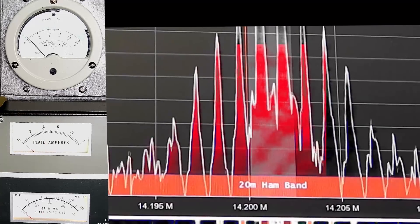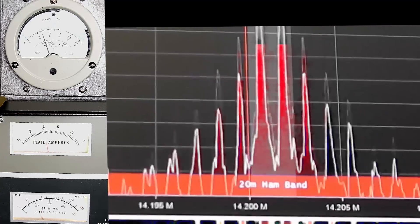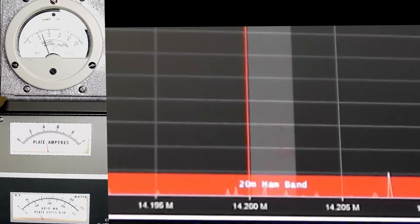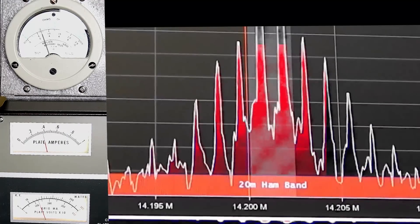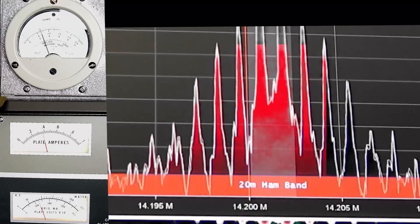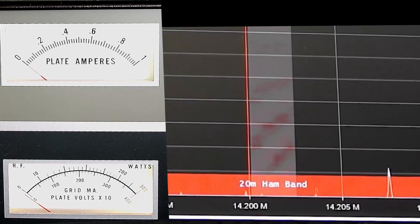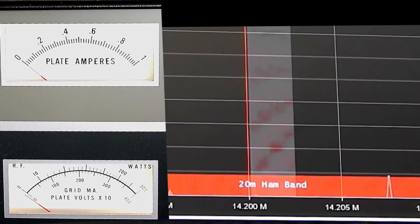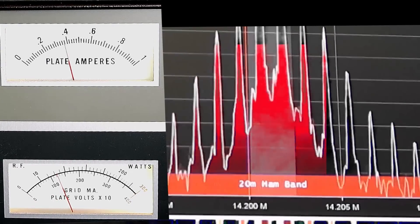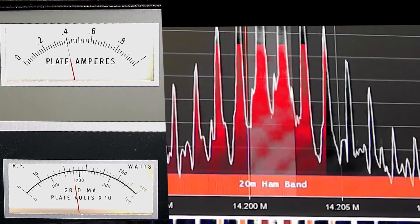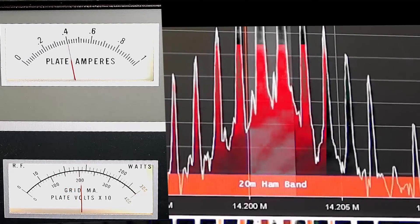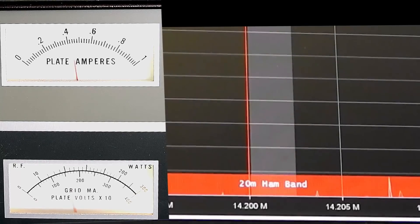All right, that's 450 watts and I've got about 100 mils of grid current, almost 400 mils of plate current, about 125. Let's run the drive up and I'm going to watch the grid current, that's the bottom meter. I'll watch the grid current. Now it's 200 mils, the plate current stayed about the same. That's not good for the tube.